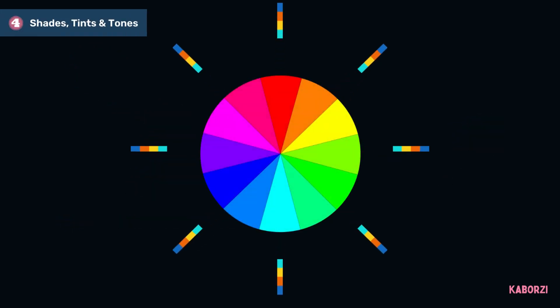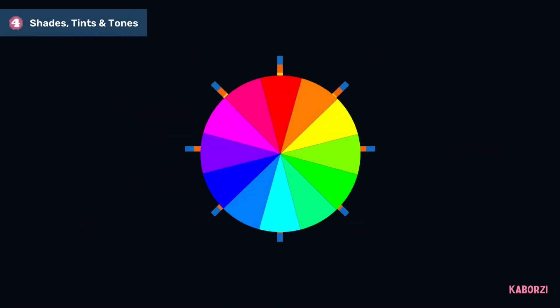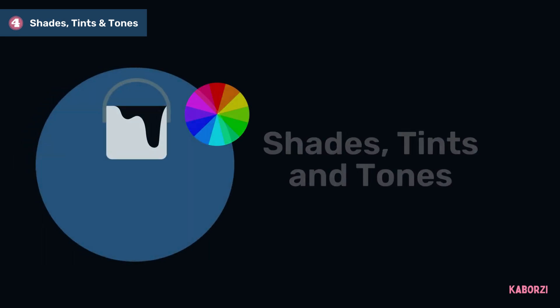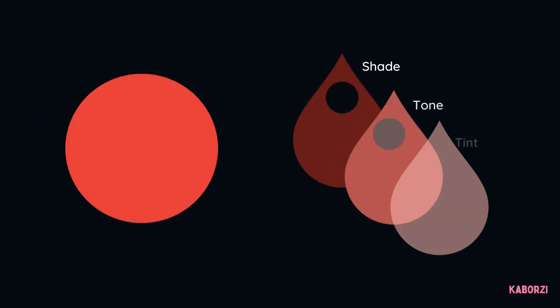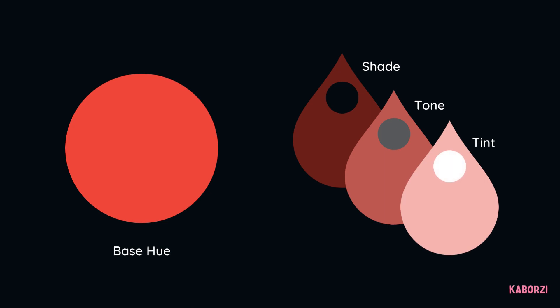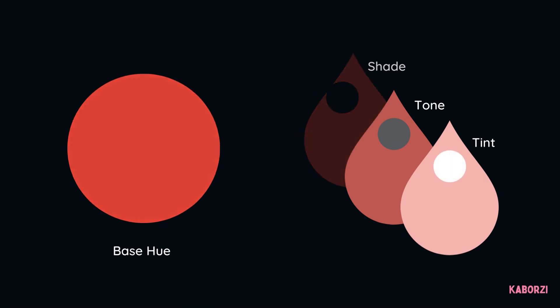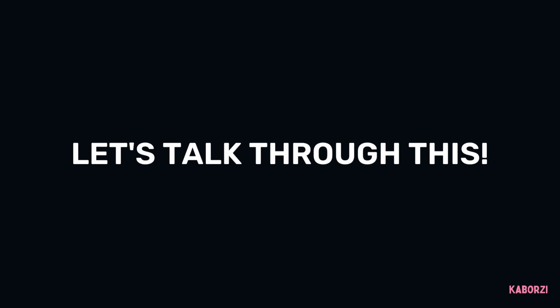The twelve colors are highly versatile. We can create shades, tints, and tones of each color by adding black, gray, and white to a base hue to create different variations and effects. Let's talk through that process a little bit more.